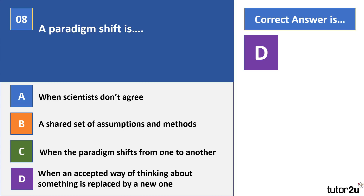A paradigm is an accepted way of thinking that people share in science. Perhaps new researchers come along, bring in new ideas, and then scientists don't agree. Eventually we see a change where an old paradigm — a particular way of thinking — is replaced by a new, arguably better way of thinking.